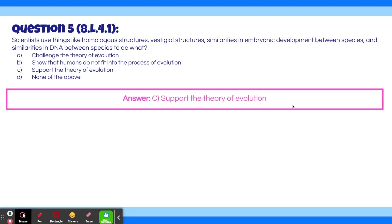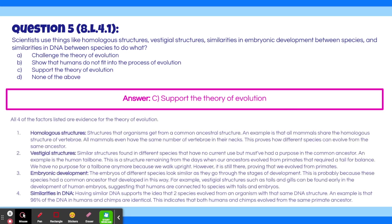The answer is C, support the theory of evolution. All four factors listed are evidence for the theory of evolution. The first was homologous structures — these are structures that organisms get from a common ancestral structure. An example is that all mammals share the homologous structure of vertebrae. All mammals even have the same number of vertebrae in their necks. This proves how different species can evolve from the same ancestor.